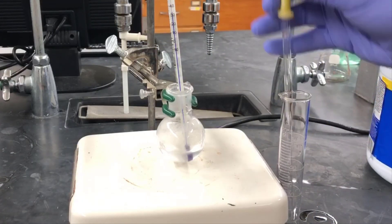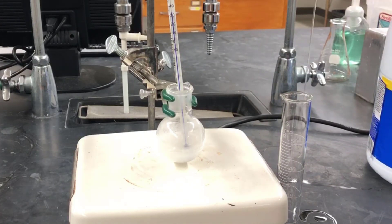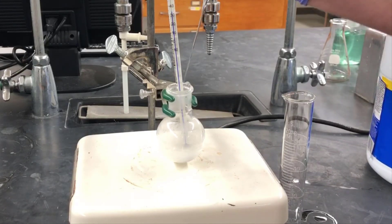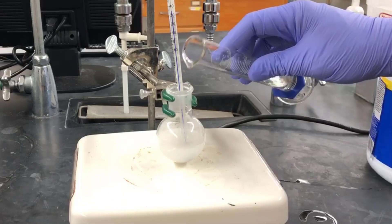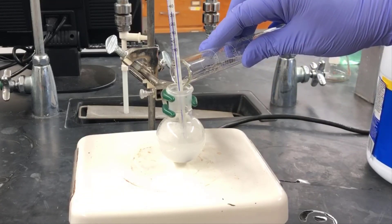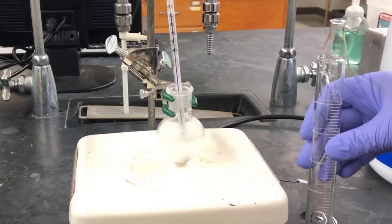When you notice the temperature is starting to drop, you can add the bleach more quickly. Here I'm adding pipettefuls at a time, and the temperature isn't really rising. The reaction is going quite slowly now, and it's okay to pour in the rest of the bleach solution. You can see the temperature has remained below 40 degrees the whole time.